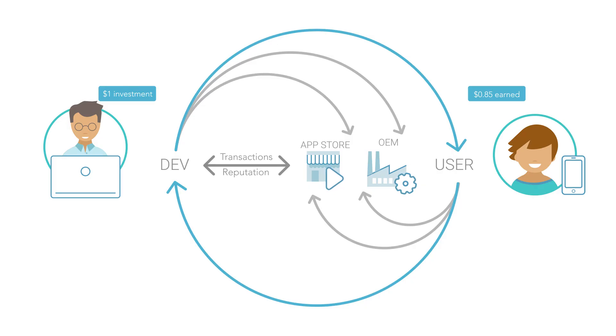Disruption happens when we apply a new technology to an old problem. The new technology here is the blockchain. The old problem is the financial transactions inside the App Store — a problem that affects billions of users, and sometimes they don't even realize it. That's the challenge for AppCoins.